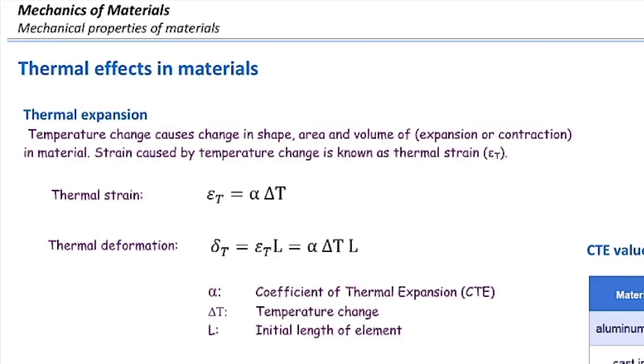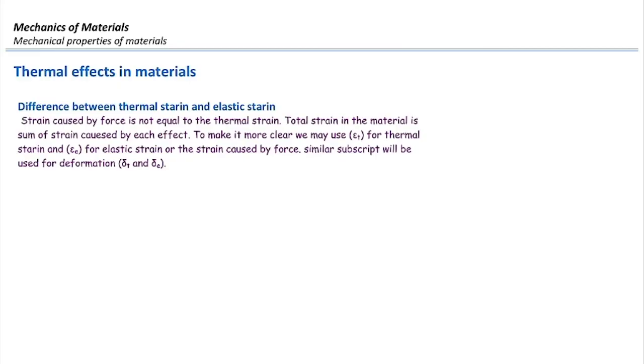Thermal strain is independent from elastic strain. I want to highlight this because this is sometimes confusing. If you want to determine how much is the total strain in the element, that would be the sum of thermal strain, or εₜ, and elastic strain, or εₑ. So thermal strain, as we discussed, is α ΔT. Elastic strain would be stress divided by modulus of elasticity.